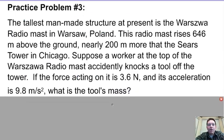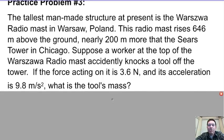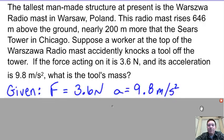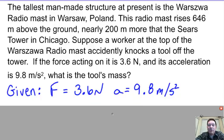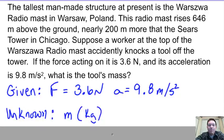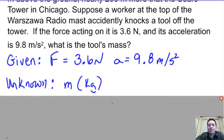Practice problem number three: the tallest man-made structure at present is the Warsaw Radio Mast in Warsaw, Poland. Suppose a worker at the top accidentally knocks off a tool from the tower. If the force acting on it is 3.6 Newtons and the acceleration is 9.8 meters per second squared, what is the tool's mass? Here we've got a lot of extra context that doesn't affect the calculation — our givens are force equals 3.6 Newtons and acceleration equals 9.8 meters per second squared, and our unknown is mass in kilograms.